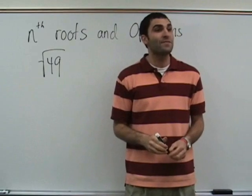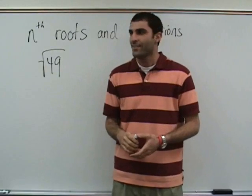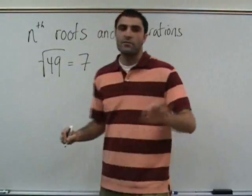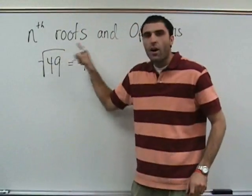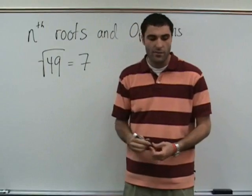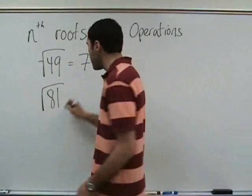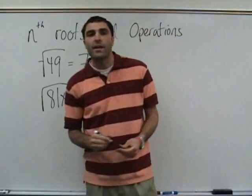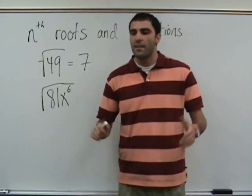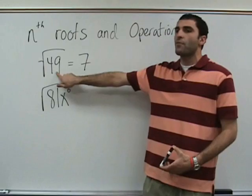We start with things that are easy and then move to things that are challenging. What's this shape thingy called? Square root. It's called the square root. Who can define in their own words what square root is? A number times itself. Good. A number times itself. So what times itself is 49? Seven.